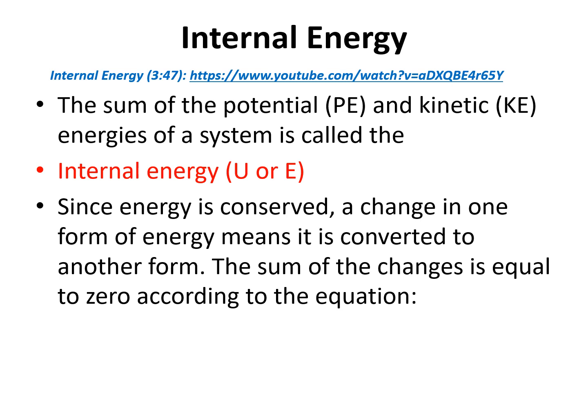Since energy is always conserved according to the first law of thermodynamics, if one type of energy changes in a system, then another type is going to change in the opposite direction to counteract that change. We can look at this mathematically: the changes in kinetic energy, potential energy, and internal energy all need to add up to zero because the total energy is conserved — it can't be created or destroyed.